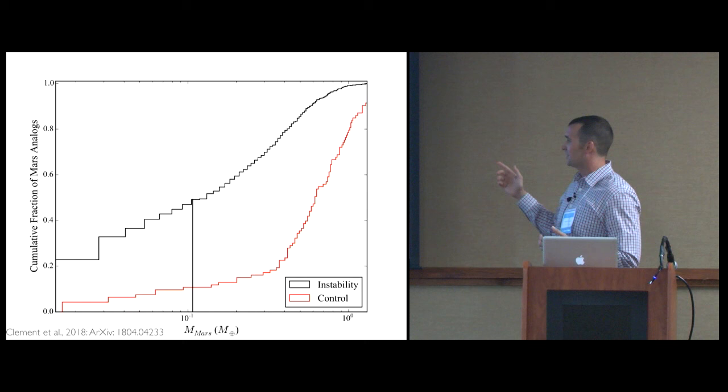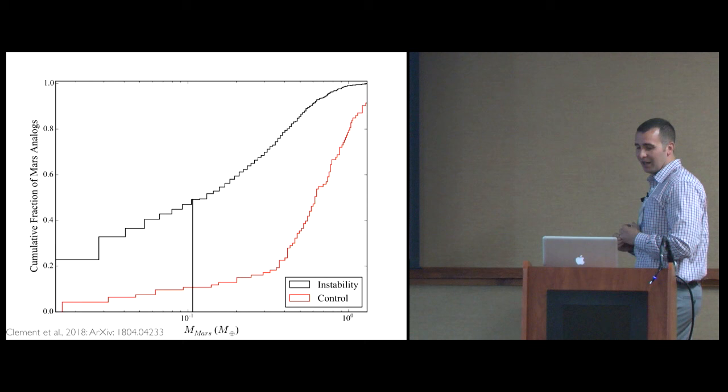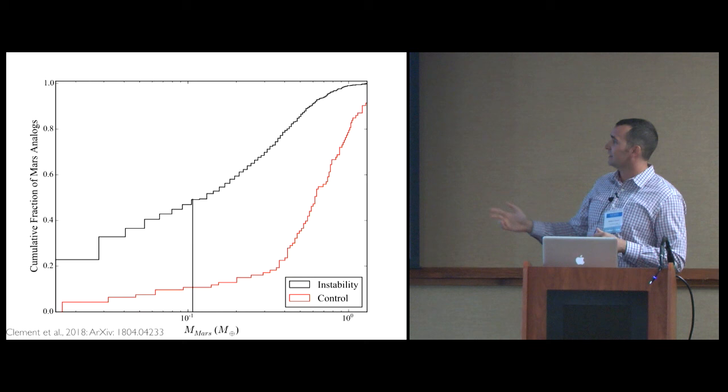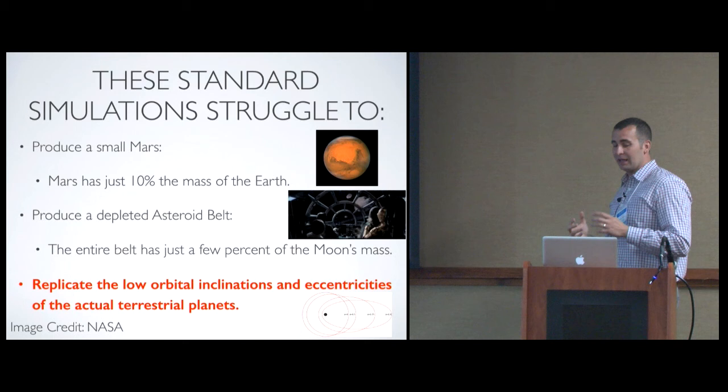So how do we do with forming small Marses? We do fairly well. The red line here, this is a cumulative distribution plot. The red line is our control simulation. As you can see, over 80% of them form Mars analogs several times larger in mass than actual Mars, very much closer to Earth's mass. The vertical line here is the actual mass of Mars, so you can see about half our Marses are less mass than actual Mars and half of them are larger. So we're very successful at forming a low mass Mars.